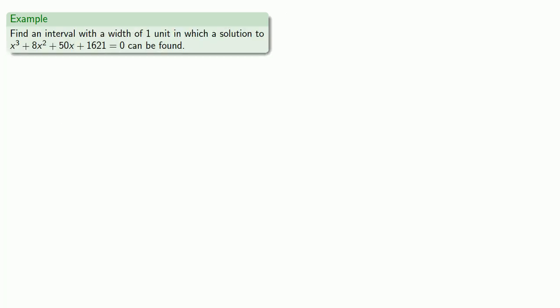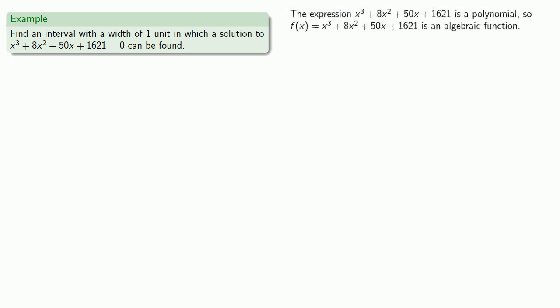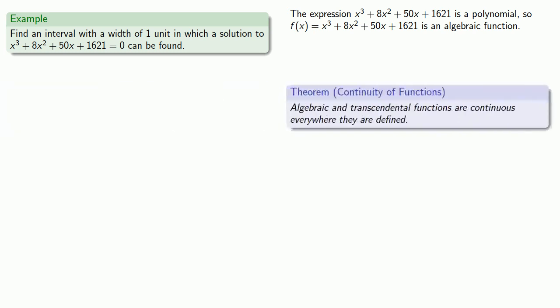Now let's take a different tactic. We want to find an interval with the width of one unit in which we can find a solution to x³ + 8x² + 50x + 1621 equals 0. The first thing we want to establish is that the expression is a polynomial, which means f(x) is an algebraic function. Algebraic and transcendental functions are continuous everywhere they are defined, which means we can apply the Intermediate Value Theorem. Since our target value is 0, if we can find a function value that is too large and a close-by value that is too small, then some place in between will be just right.